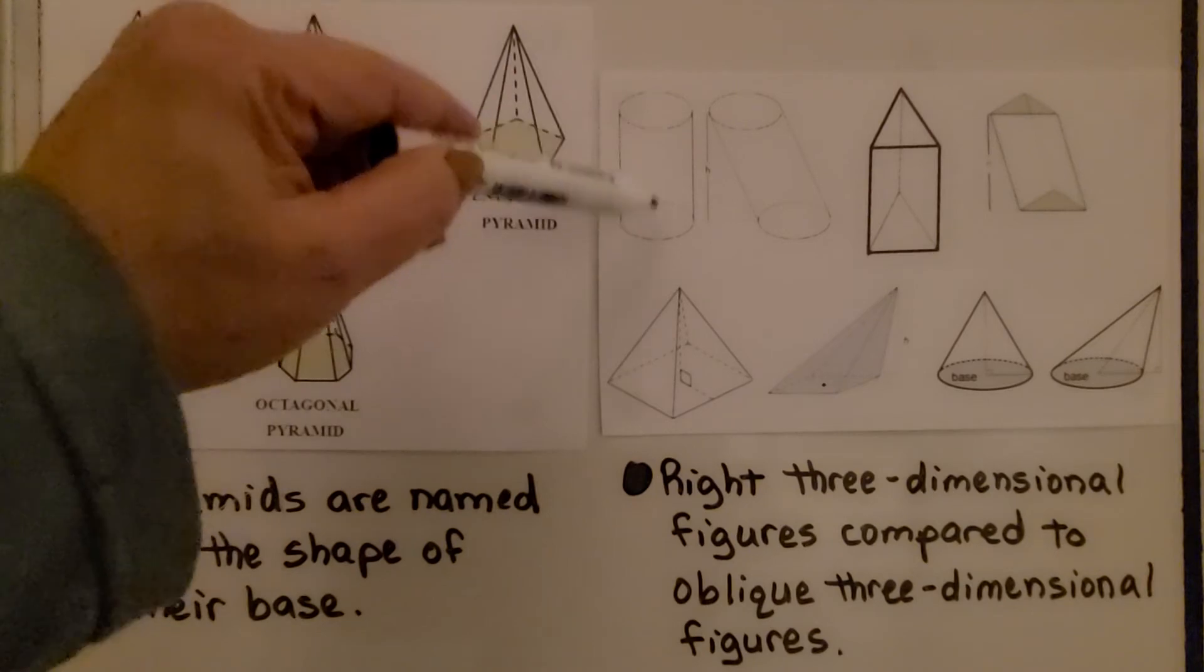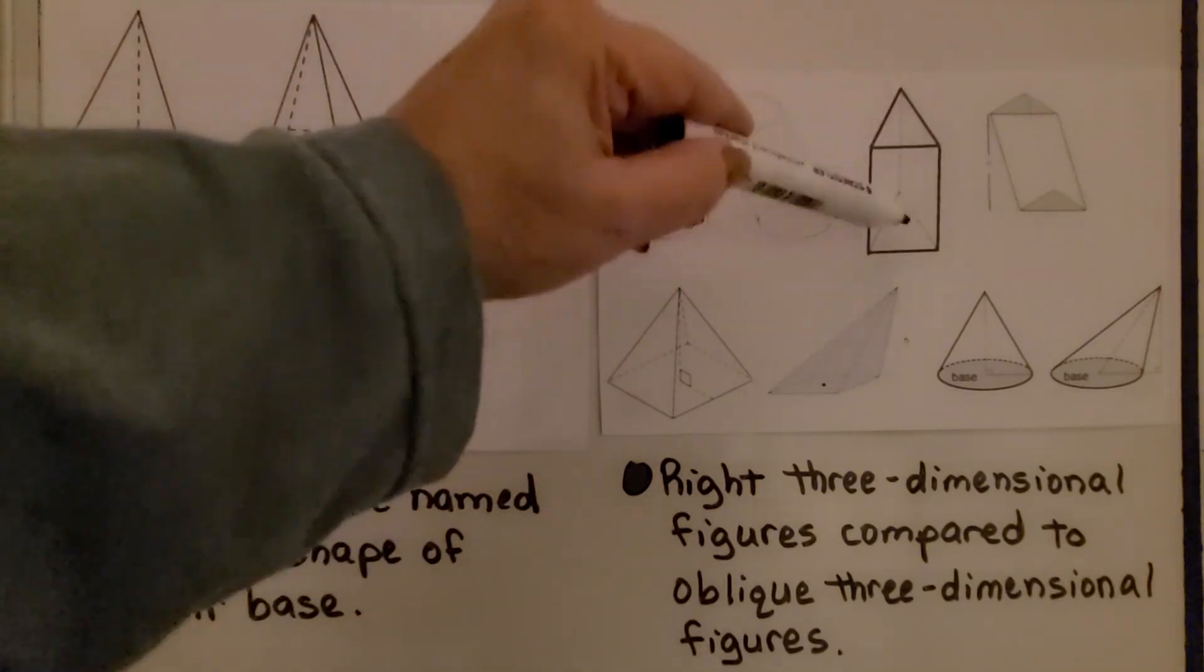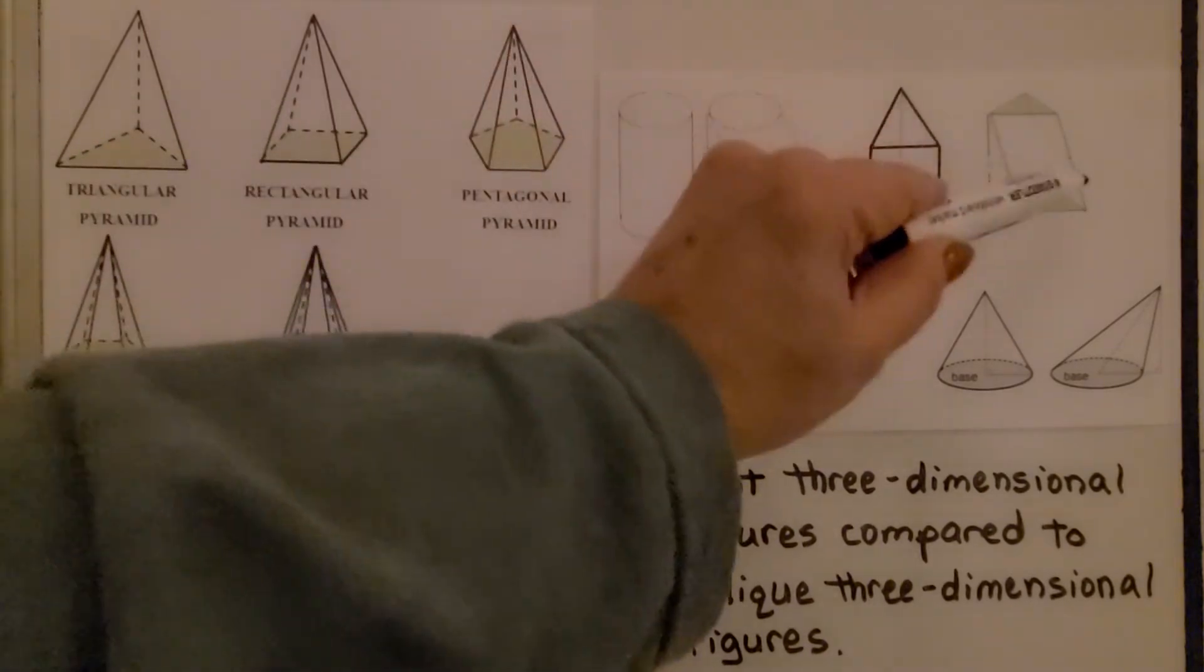So here's a right cylinder, here's an oblique cylinder. See how it's leaning? Here's a right triangular prism, here's an oblique triangular prism.